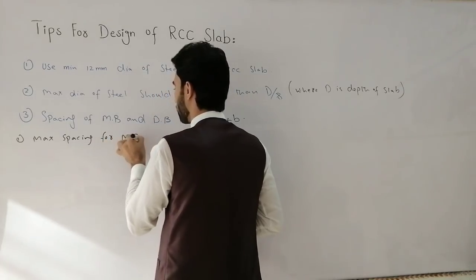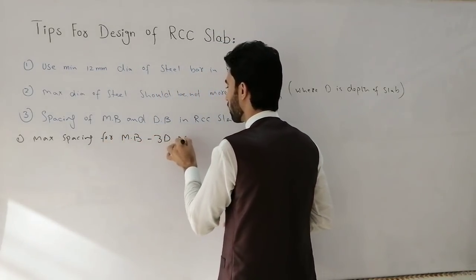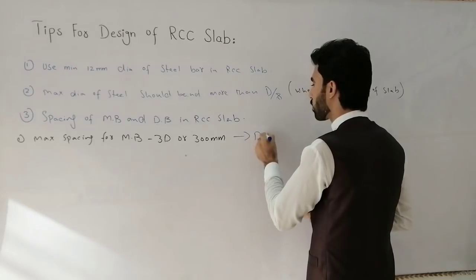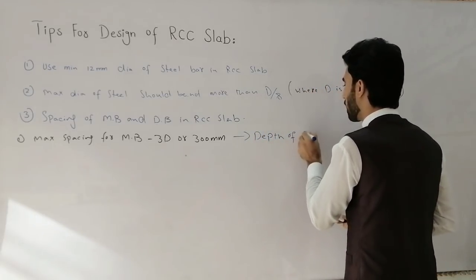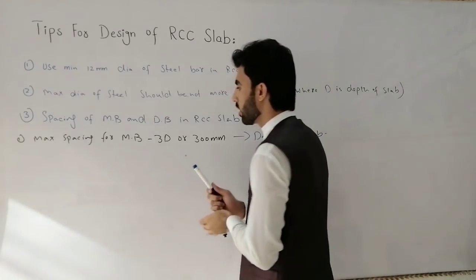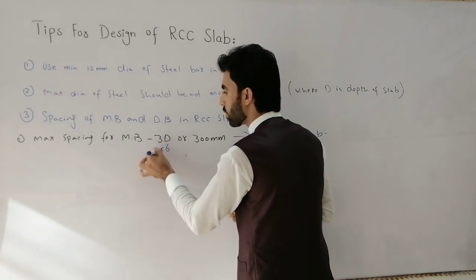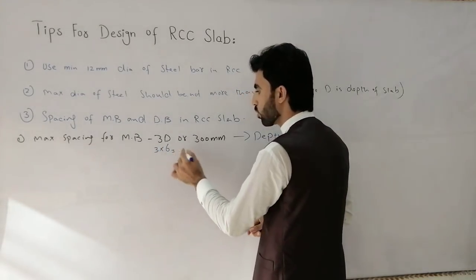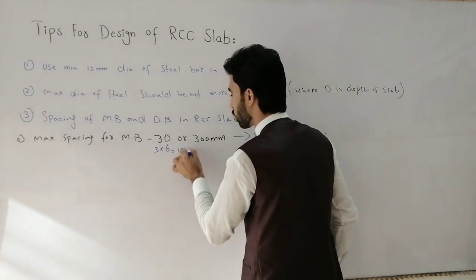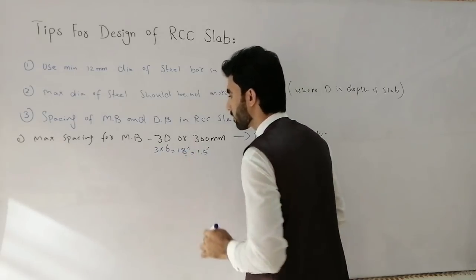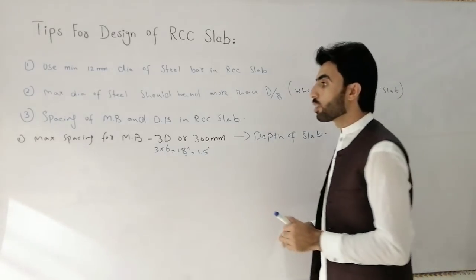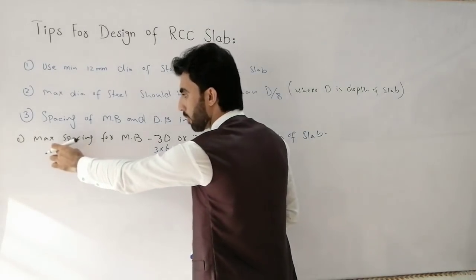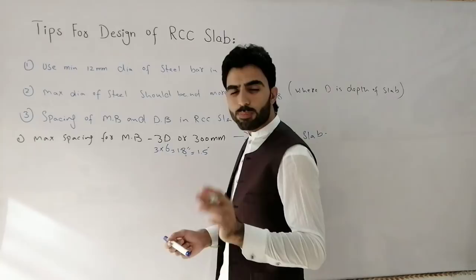Maximum spacing for main bars is 3D or 300 millimeters, whichever is less, where D is the depth of the RCC slab. For example, if the depth of the slab is 6 inches, multiply by 3 to get the maximum spacing for main bars, which would be 18 inches or 1.5 feet.